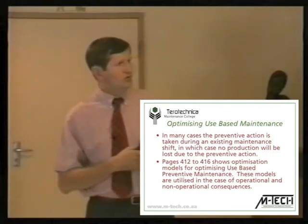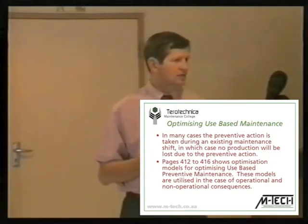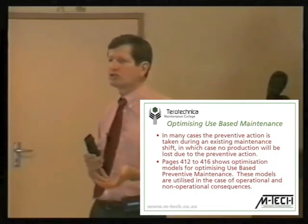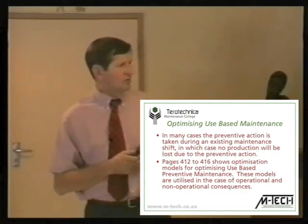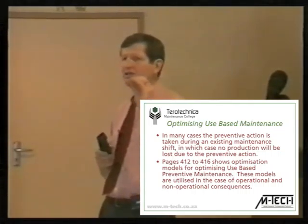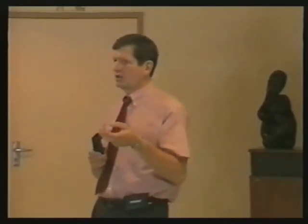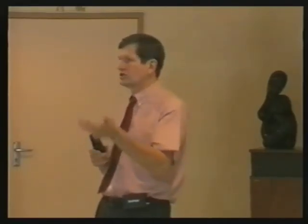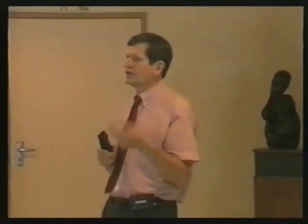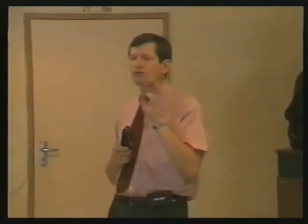Pages 412 to 416 show optimization models for optimizing use-based preventive maintenance. These models are utilized mostly in the case of operational consequences, but also in the case of non-operational consequences — in other words, where production loss is not involved. Both operational and non-operational consequences are RCM terms. In RCM you talk of failures with economic consequences: one class where you have operational consequences, and one where you do not. RCM also has failures with safety consequences and hidden consequences, but we're talking specifically of the class of economic consequences.